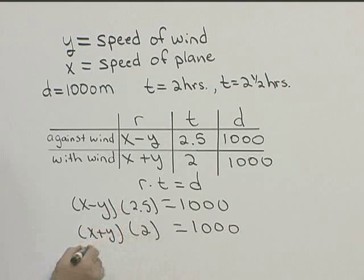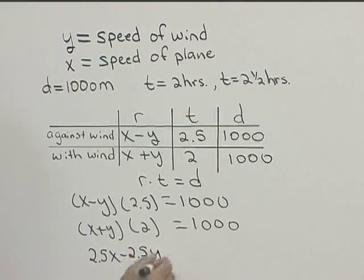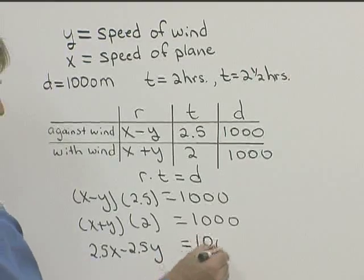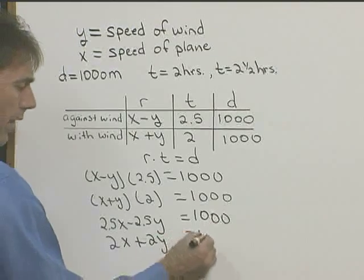Now, if we clear parentheses, we'll have 2.5X minus 2.5Y is equal to a thousand, and we'll have 2X plus 2Y is equal to a thousand.